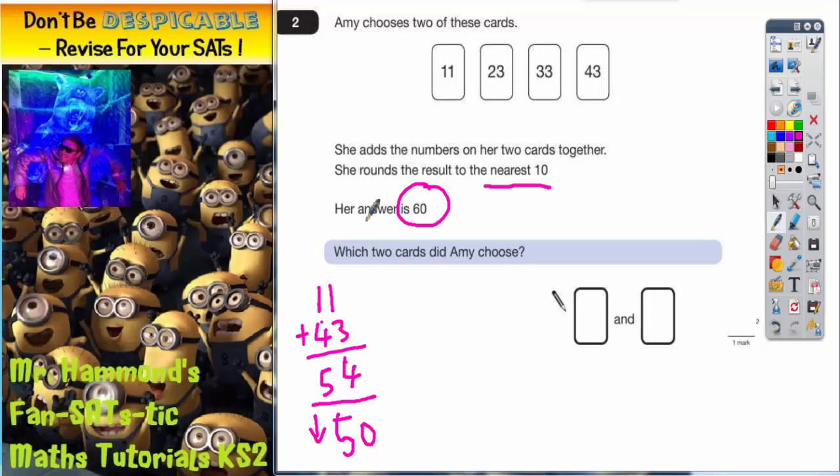So it can't be 11 and 43. Let's try another one - 23 and 43. 3 and 3 is 6, 2 and 4 is 6, so that's 66. Because 6 units is higher than 5, that's more than halfway, so the 6 tens will round up to 70.